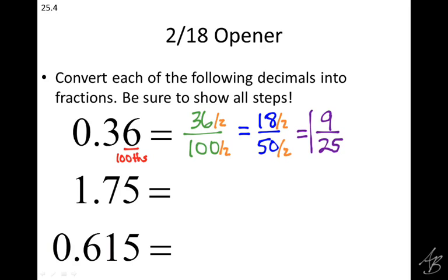Now, I did reduce by two twice here, which means I could have reduced one time by a bigger number. What could I have reduced by from the beginning? Four. Could have reduced by four, right? So if I did 36 divided by four, I would have gotten nine, and a hundred divided by four would have given me twenty-five, so I would have gotten it in one step. But it's a lot easier, I think, to just reduce by two and maybe have to do it a couple extra times rather than look for a bigger number to reduce by.